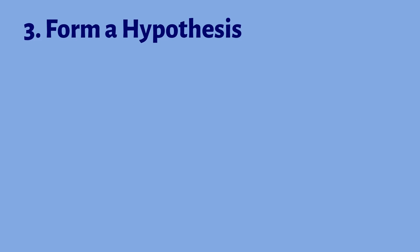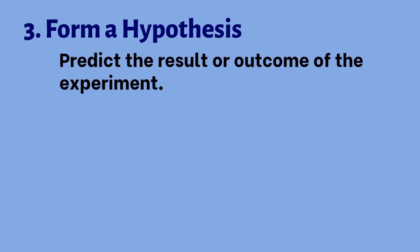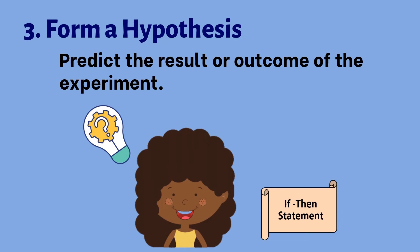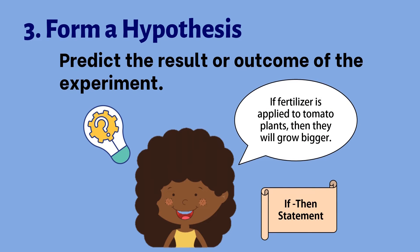The third step is forming a hypothesis. This is when the scientists predict the result or outcome of the experiment. Betty uses the if-then statement. She hypothesizes that if fertilizer is applied to tomato plants, then they will grow bigger.